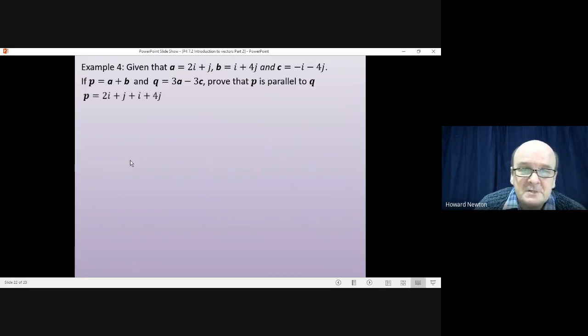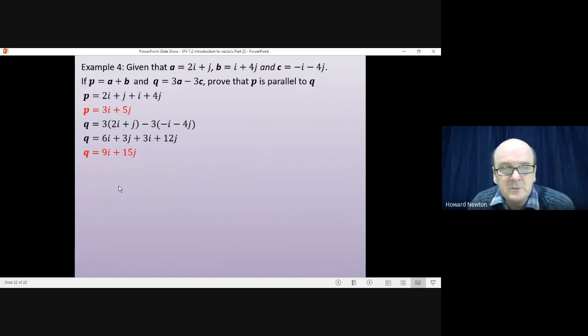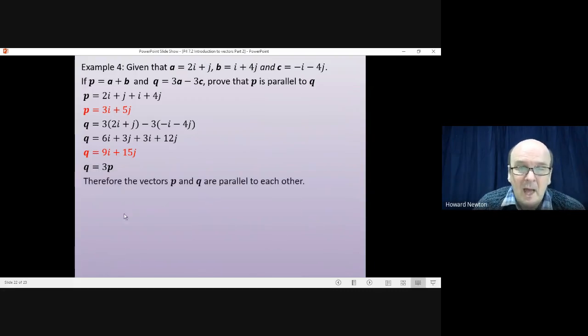Okay, let's have a look. So first of all we need to work out the vectors p and q. Well, p is a plus b. If I add a and b together I would get that. Which simplifies to 3i plus 5j. Same thing for q. 3a minus 3c would be that. Multiply the brackets will give me that. Collect the i's and j's together. Gives me q is equal to 9i plus 15j. And then the last thing we have to do is prove that p is parallel to q. Well, q is equal to 3 times by p. 3 times 3 is 9 for the i's. 3 times 5 is 15 for the j's. So q is exactly 3 times by p. And what that means is that the vectors p and q are parallel to each other. q is 3 times as long. But they are parallel.